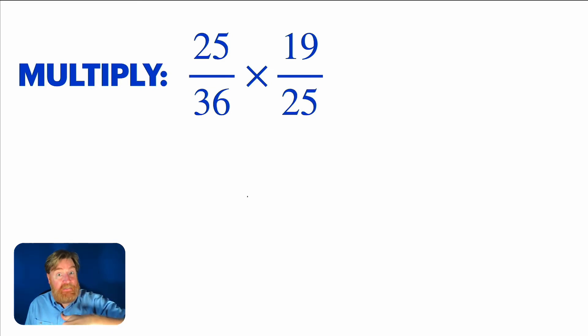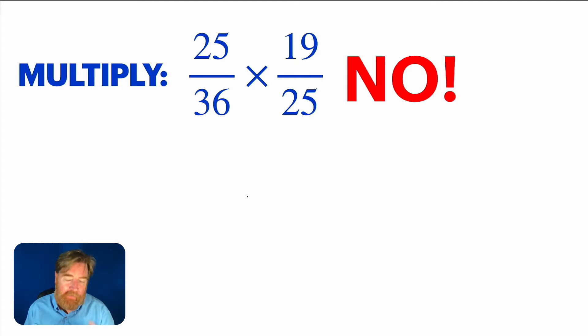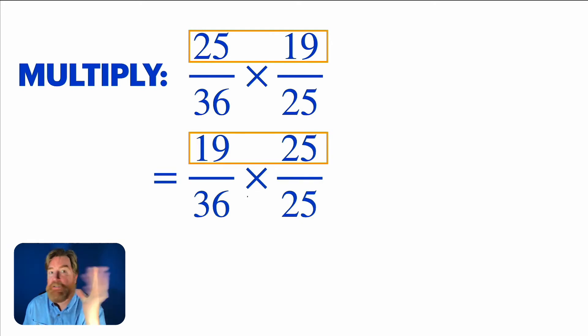By the way, in the last example we did the denominators, we commuted them. Let's do the tops this time. Oh, yeah, I'm sorry. Yes, you guys are right. Of course we can multiply thirty-six and twenty-fifths. You got it. You don't want to do it. I get it. But look, what if we commuted twenty-five times nineteen and made it nineteen times twenty-five? It's the same product, right? Commutativity.